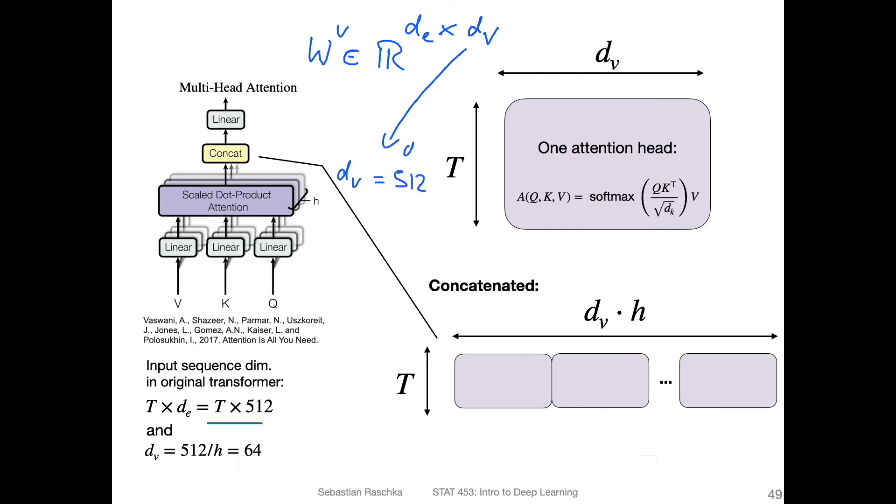So this is T divided by h, that's the number of attention heads. So this is 64. And this is such that when you multiply it by the number of attention heads, you get the input embedding size back. And that is useful when you want to use something like skip connections.